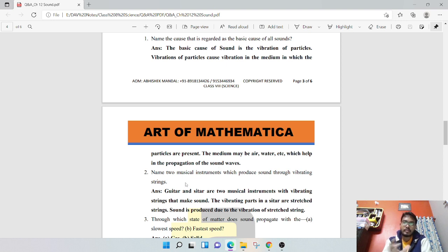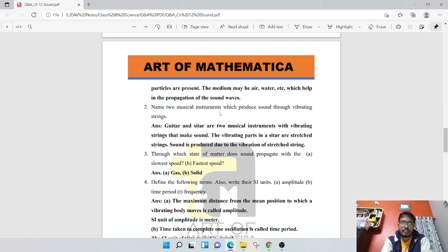Name two musical instruments which produce sound through vibrating strings. Guitar and sitar are two musical instruments with vibrating strings that make sounds. The vibrating part of the sitar are stretched strings. Sound is produced due to the vibration of the stretched string. When the string is tight and you vibrate it, the air inside vibrates and sound is generated.